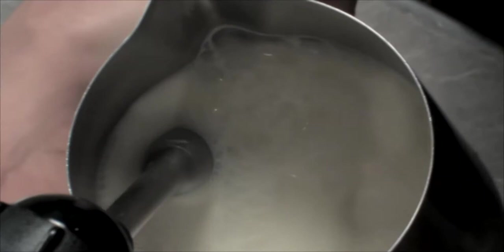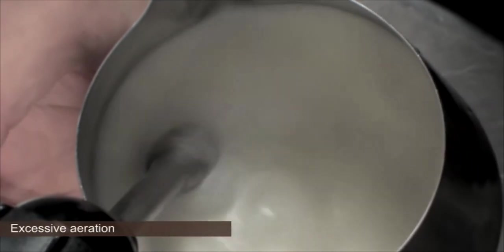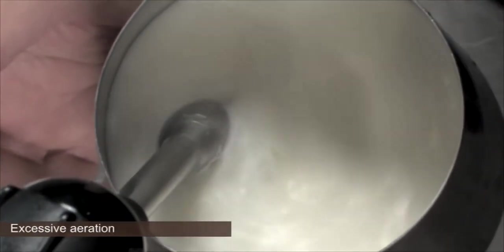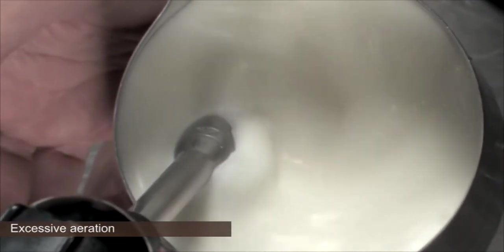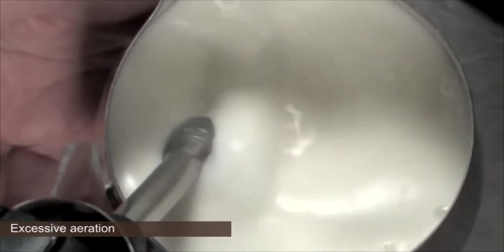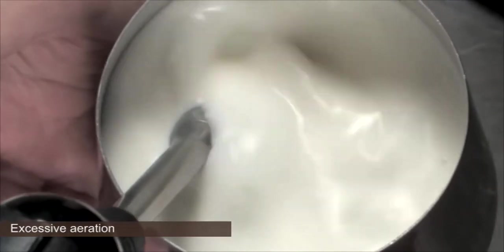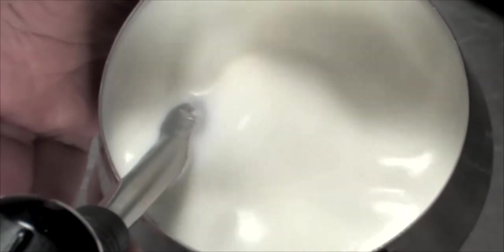Another common problem that people make when they're learning to froth the milk is that they over aerate the milk. So what happens is you're punching big bubbles into the milk but it never gets to the point where it's actually going round and round and making it thinner because they've left it too late to plunge the end of the wand deep into the milk.